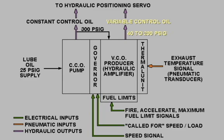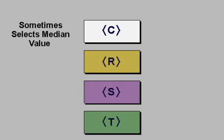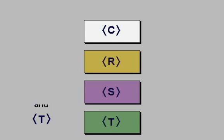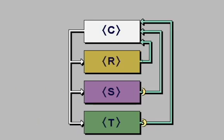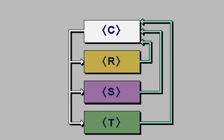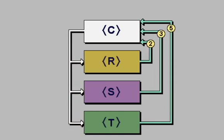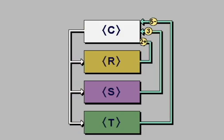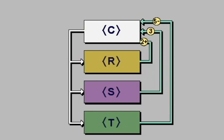To help all three processors control more closely together, C is sometimes used to select a median value. This helps readjust R, S, and T. For example, let's say the turbine is controlling a certain parameter. R tells C that it is sending a value of 2, S sends a value of 3, and T sends a value of 5. C then communicates to each the median value, which is 3. Please note that this is a median value, not an average. R and T will then adjust closer to 3 so that each microprocessor is sharing the output more equally.